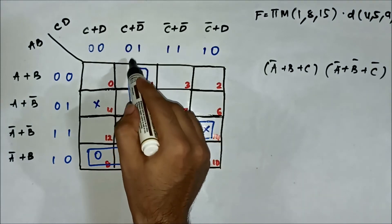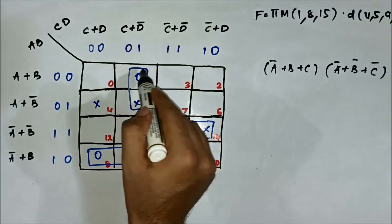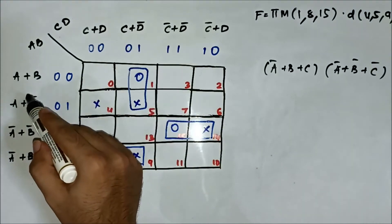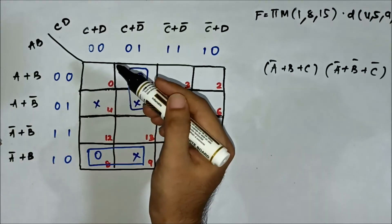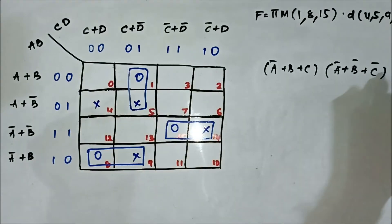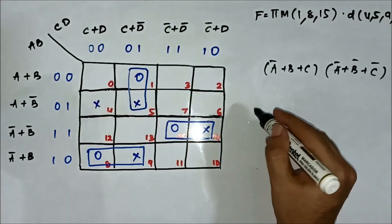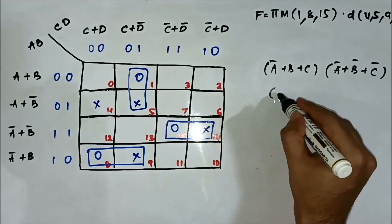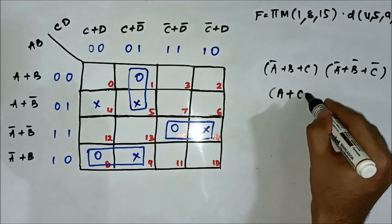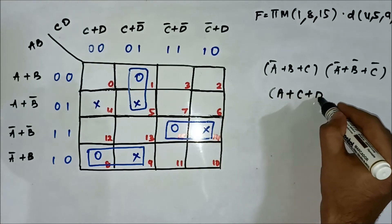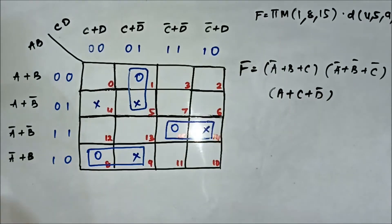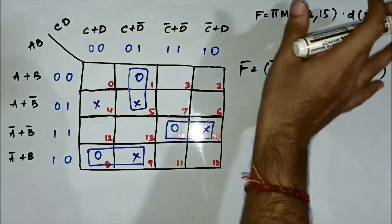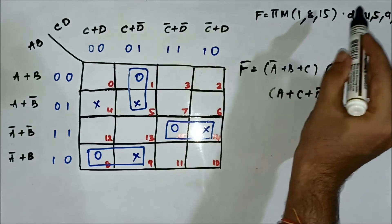For the pair (8, 9): A+C+D̅ on the horizontal side. So the simplified boolean expression for this set of max term values and don't care values is (A̅+B+C)(A̅+B̅+C̅)(A+C+D̅).